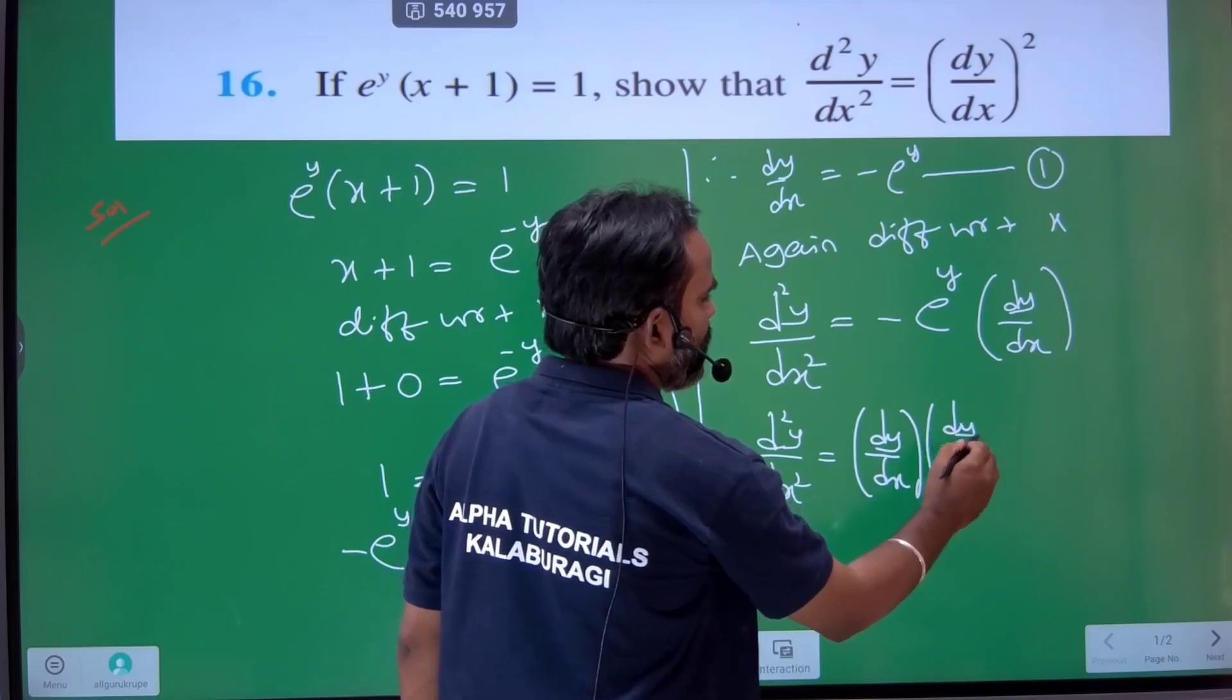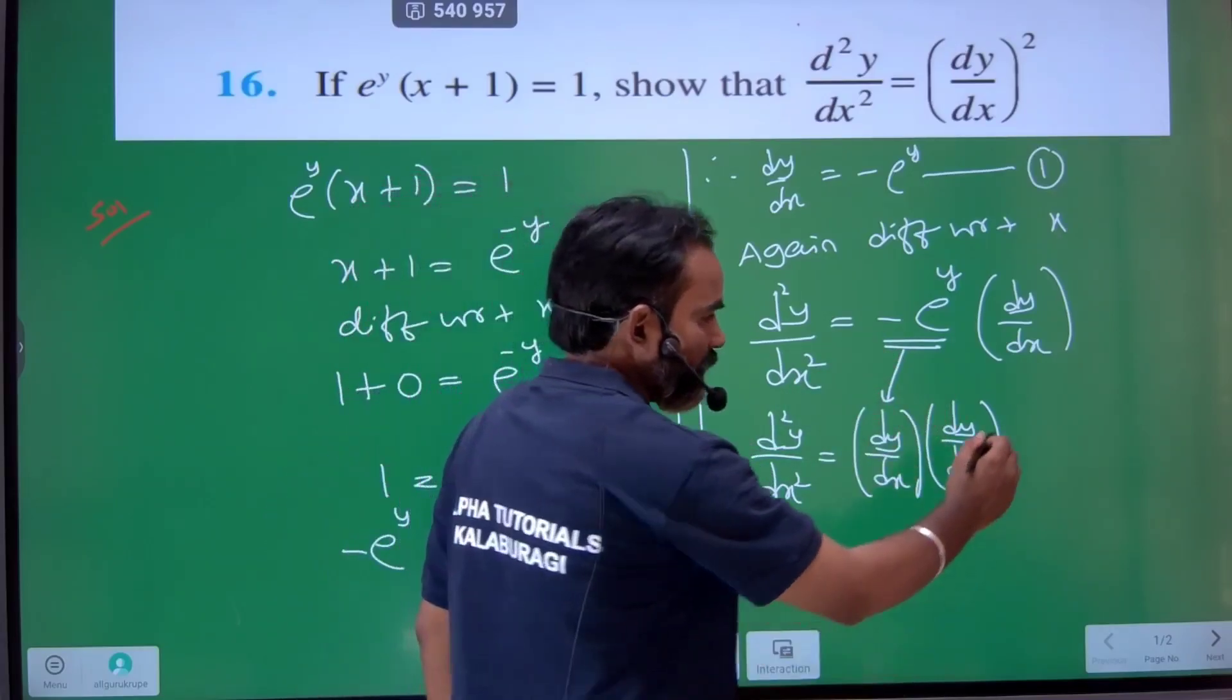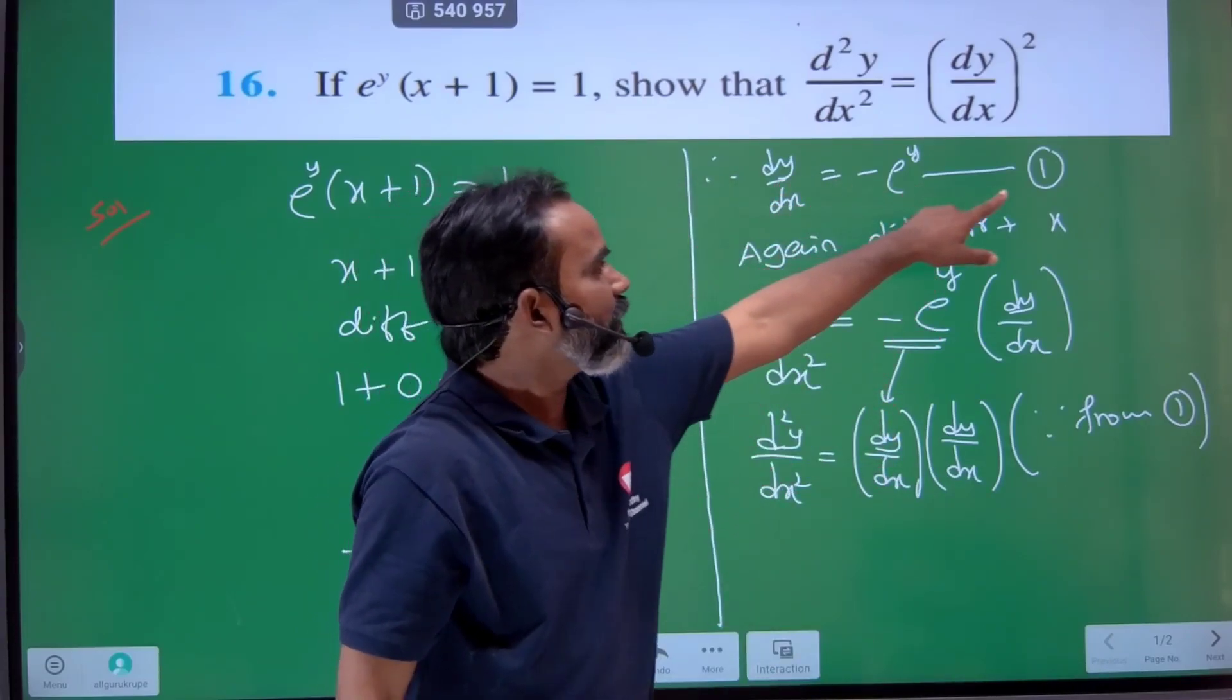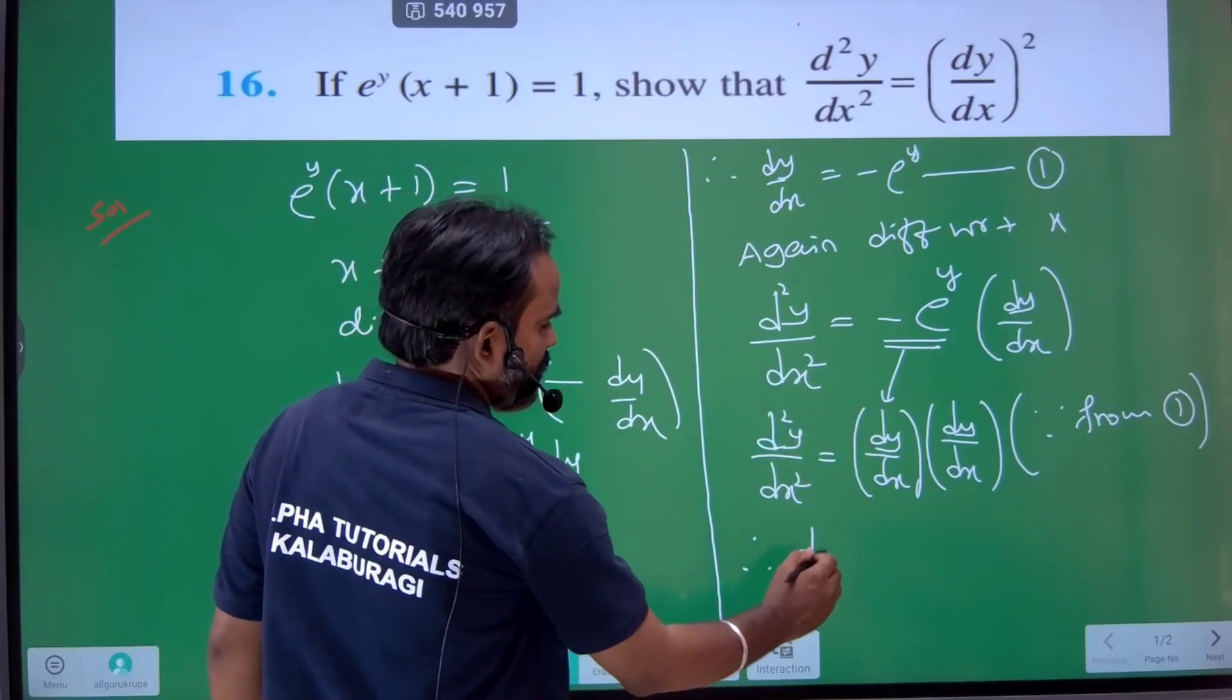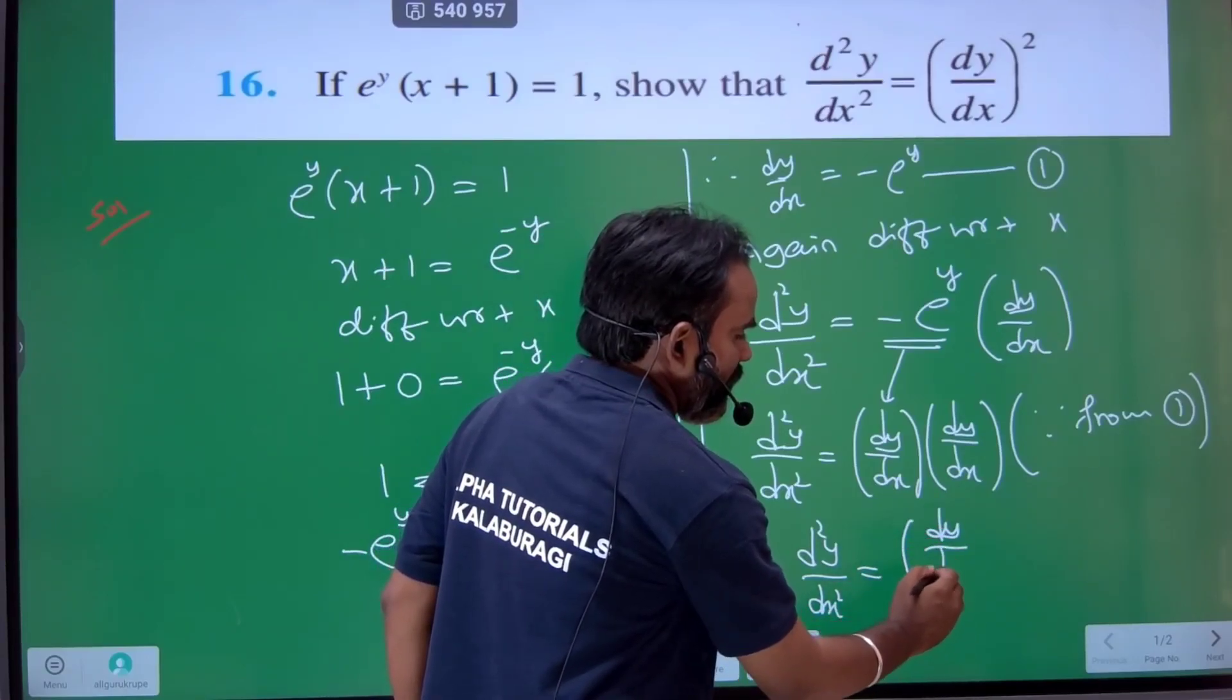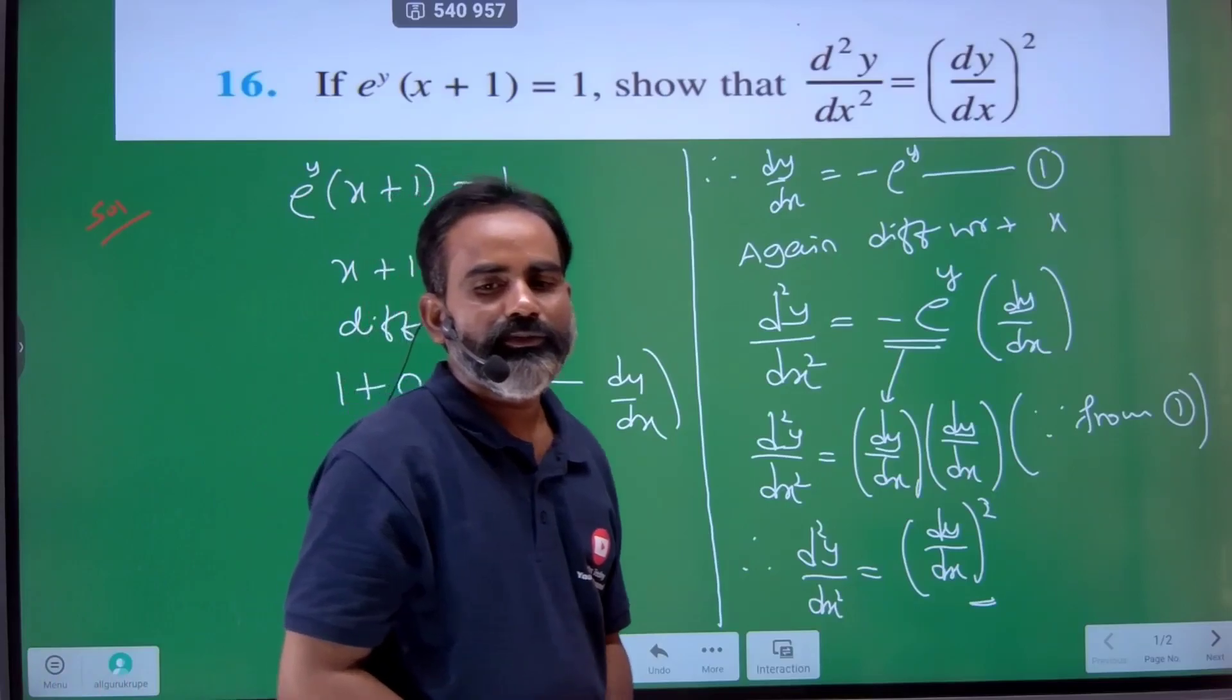From equation one, we can substitute e power of minus y. This gives us d²y by dx² equals (dy by dx) squared. Hence proved.